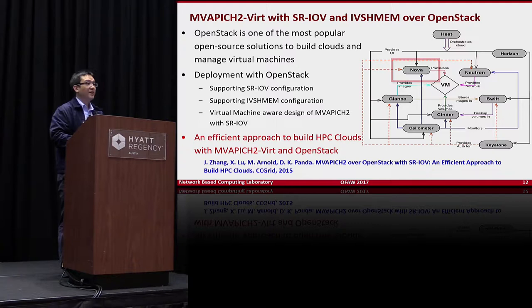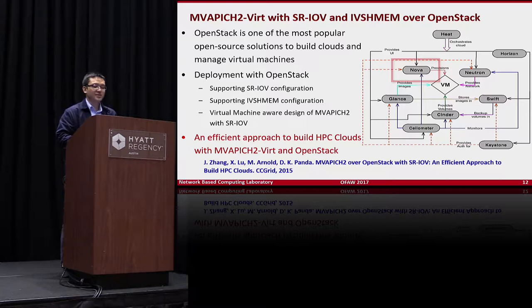One technique is inter-VM shared memory (IVSHMEM), which enables shared memory-based communication across co-located virtual machines on one physical node. We leveraged this and designed a locality detector and communication-aware internal MPI runtime, so when you run MPI jobs on virtual machines, the library automatically and smartly selects the best channel based on process location. We also extended OpenStack Nova to automatically configure SR-IOV and IVSHMEM when deploying VMs for MPI jobs.